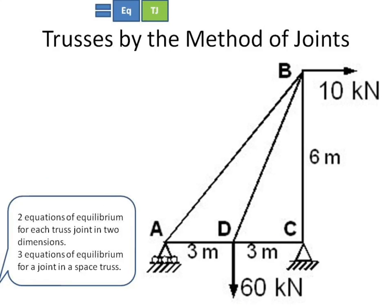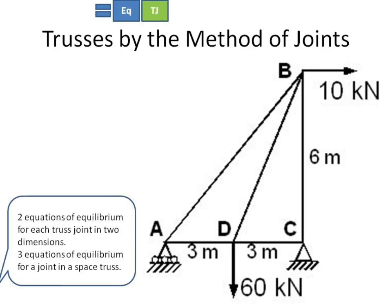Trusses by the method of joints: you're going to look at that spot in the universe. All the forces acting at that spot are concurrent. That's a particle. Every joint is a particle. So you can take this apart as a system and say, everything I have here is particle equilibrium. Same thing with a space truss—that's just a three-dimensional version.